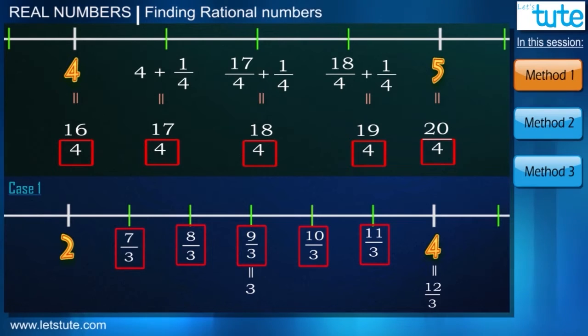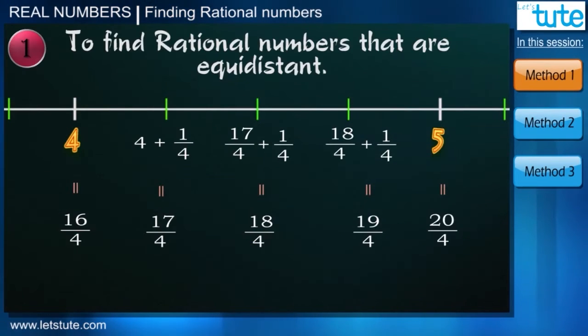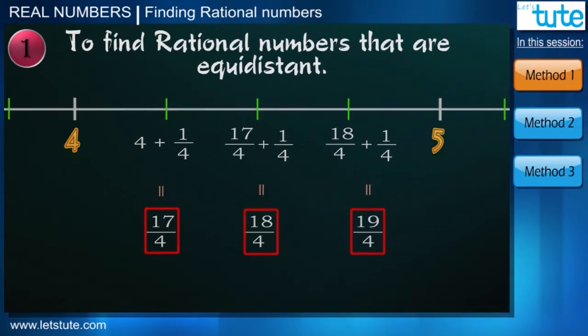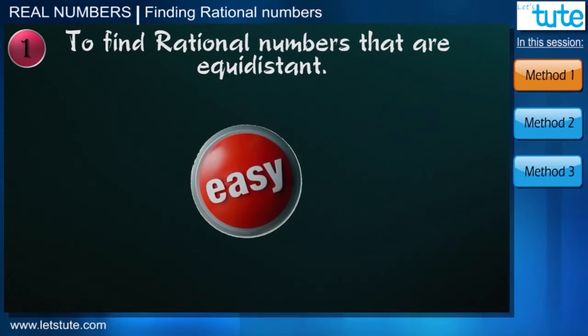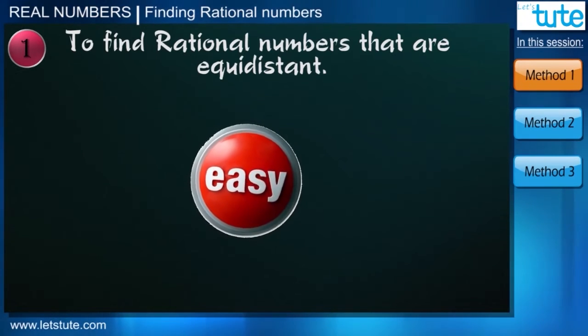We can notice the same thing in first case too. So understand that here we have divided the difference of two numbers by 4 to get three rational numbers just because we have to exclude the end points. Let's understand a simple trick on same. You might find this trick more easy.